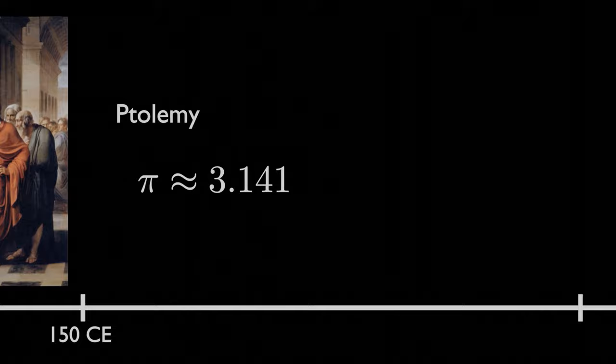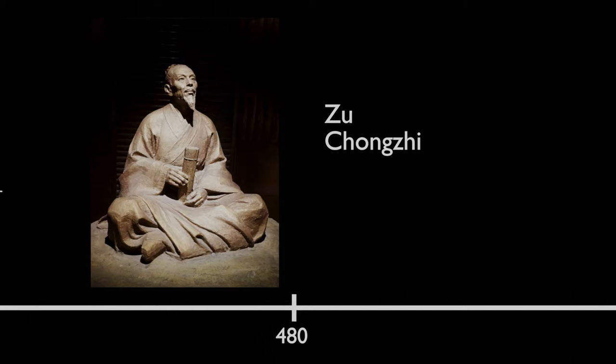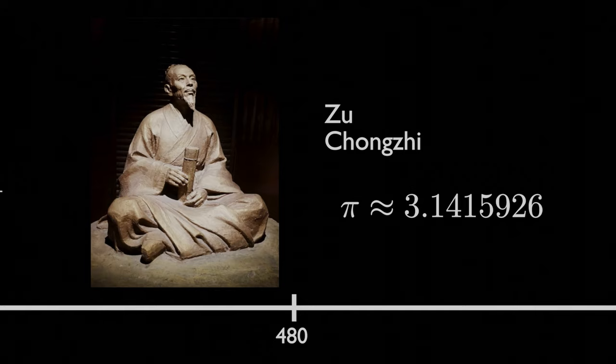Roughly 330 years after Ptolemy in 480, an ancient Chinese astronomer and mathematician, Zhu Chongzhi, would more than double the precision of approximating Pi, giving us 7 correct decimal points in the approximation.